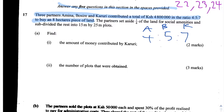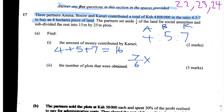We know it's 7 sixteenths because 4 plus 5 plus 7 equals 16. So they divided the total amount into 16 parts: Amina contributed 4 sixteenths or a quarter, Bosire contributed 5 sixteenths, and Karuri contributed 7 sixteenths. So the total amount of money contributed by Karuri was 7 sixteenths multiplied by 4,800,000 shillings.